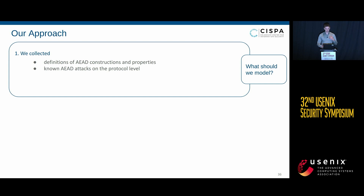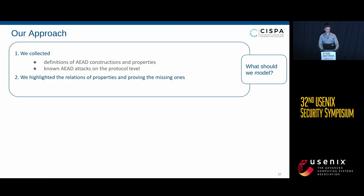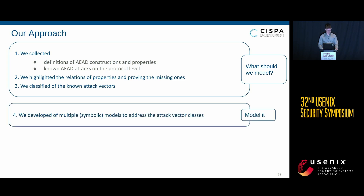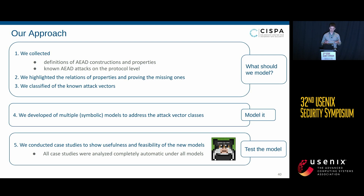Our approach was to first collect all definitions of AADs and all known attacks we could find, then relate those definitions. For those we could not relate, we tried to prove the missing relations. We also classified the attacks into known attack vectors. Afterwards, we built symbolic models to capture these attack vectors, and finally conducted case studies to show the usefulness and feasibility of our models on real-world protocols.